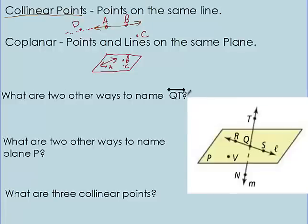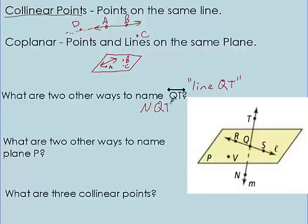What are two other ways to name line QT? Line QT is going up and down right here — these dots mean it's cutting through this plane and going straight through the bottom and straight up. What points are actually on line QT? We have points N, Q, and T. That means two other ways I could name that line: I can call this line NQ with the arrowhead line on top, or I can call this line NT. Those both work.